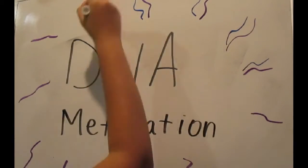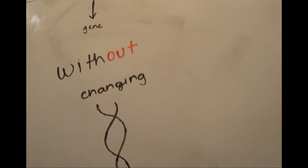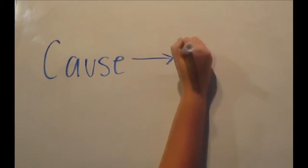This type of genetic suppression is called DNA methylation. Pretty much what happens is a methyl group binds to a gene and suppresses it from expressing itself without changing the DNA. Scientists had no idea there was such a direct cause and effect pattern found in gene expression.